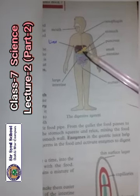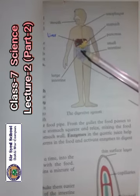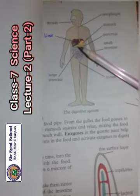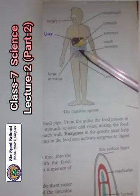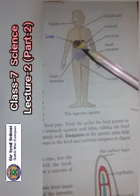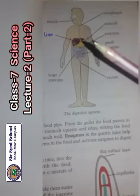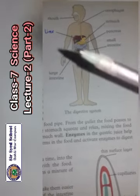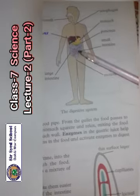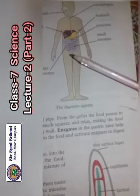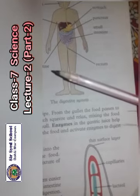In the stomach there is gastric juice, and with the help of gastric juice our food is digested. The digested food is then absorbed into the blood vessels. The undigested food moves to the last part of the digestive system, where it is stored and then released from our body.